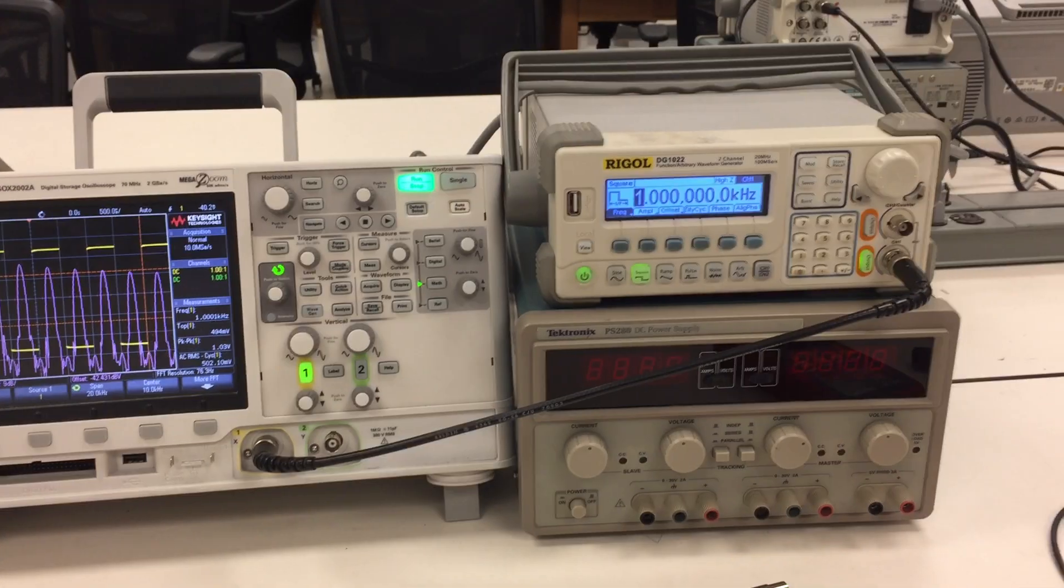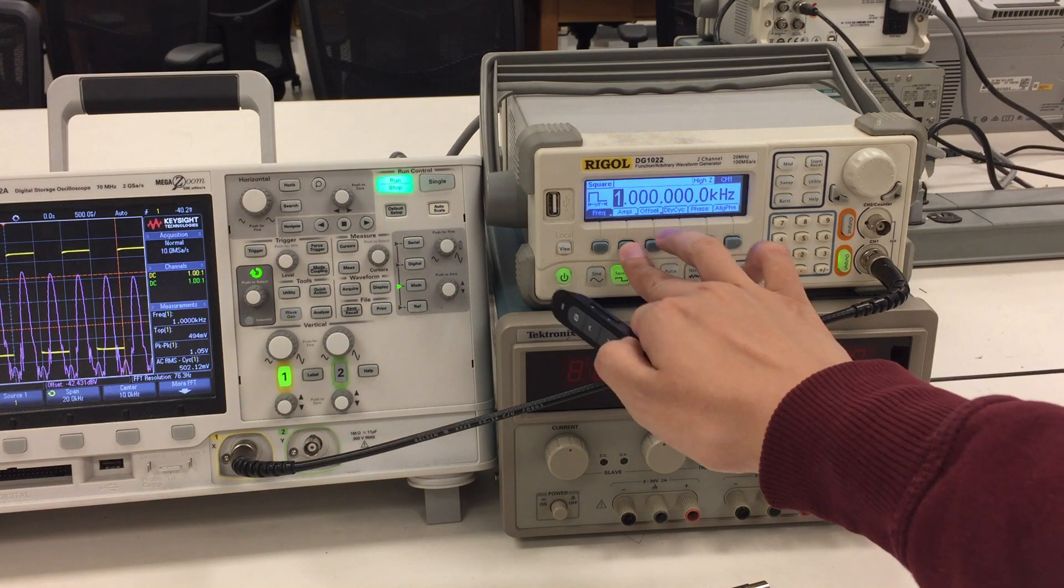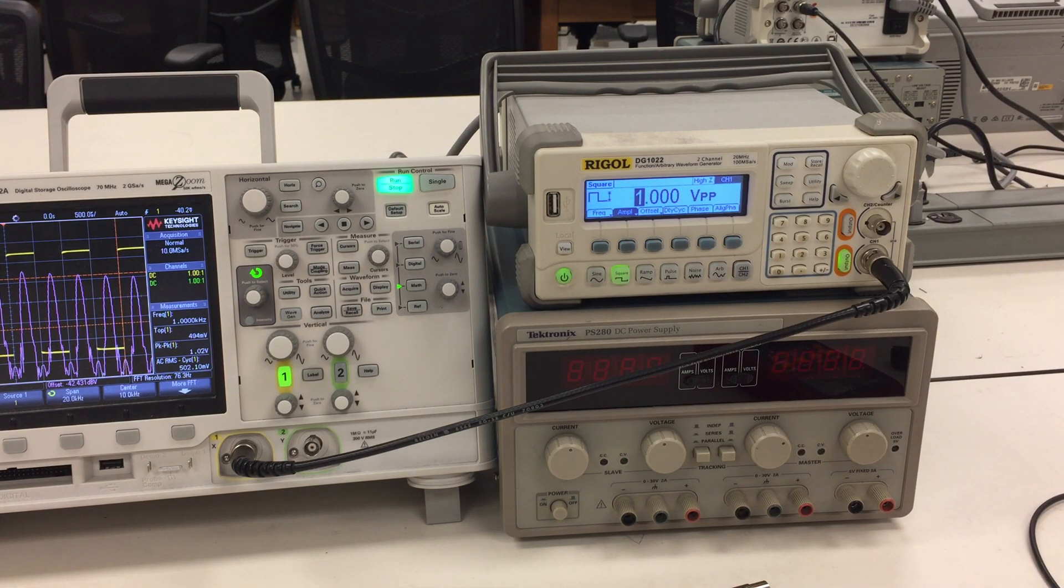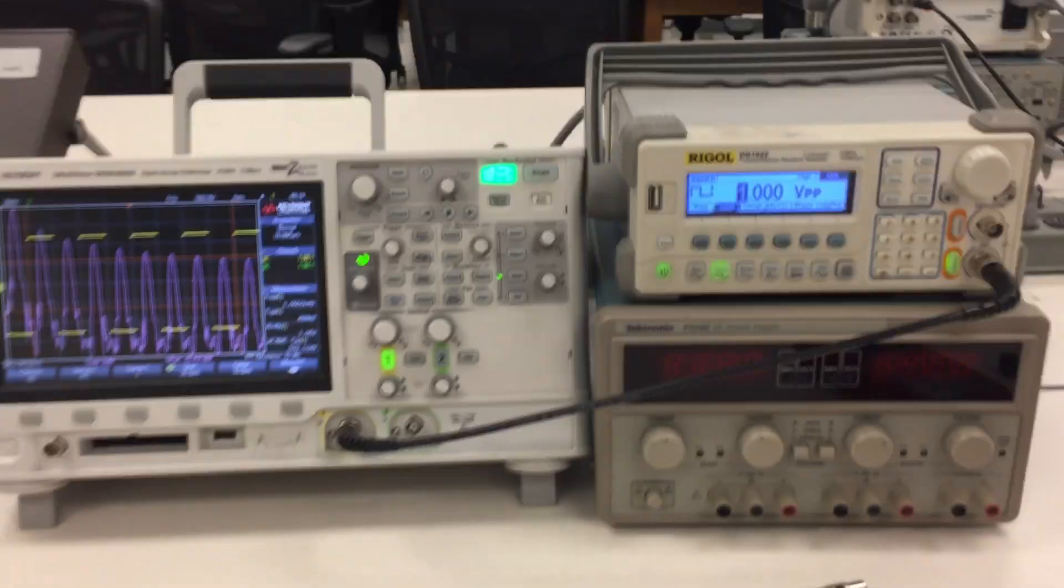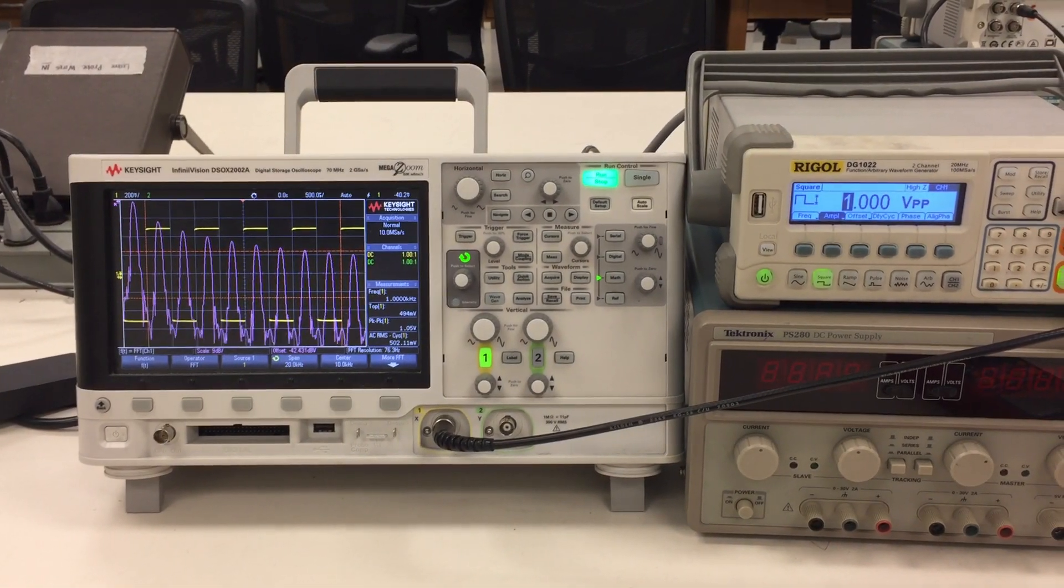As you can see here, we are generating a square wave of 1 kHz and amplitude of 1 volt peak-to-peak from the function generator, and this signal is being fed into channel 1 of our oscilloscope.